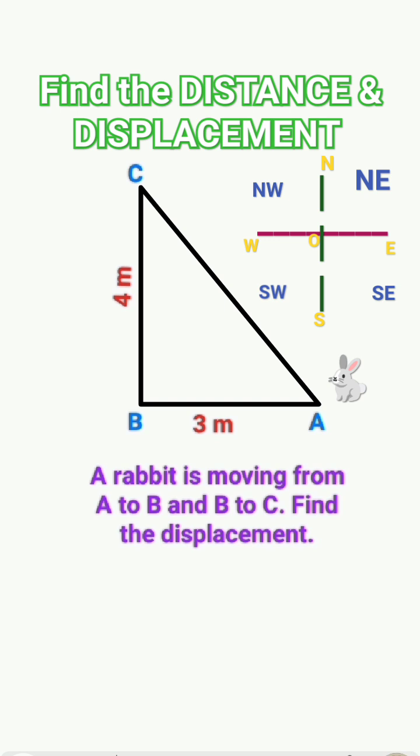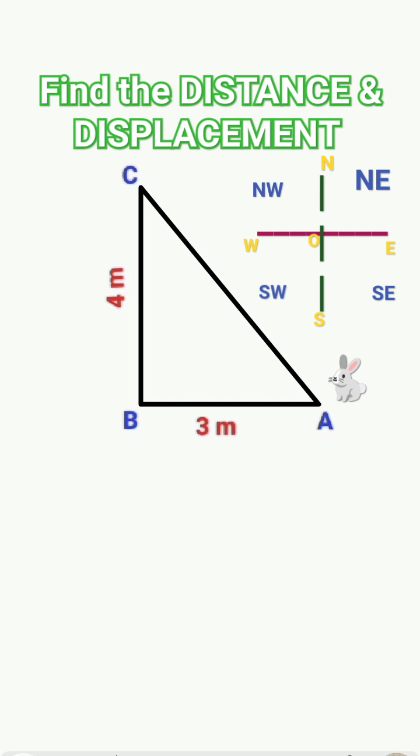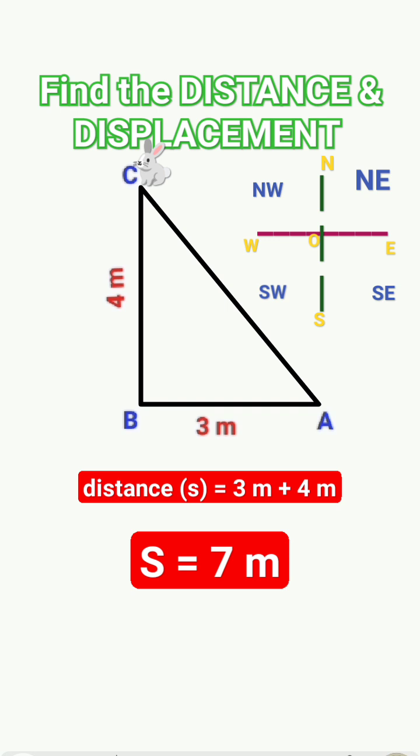So for distance, we just need to add AB and BC, which is equal to 3 meters plus 4 meters equals 7 meters. For displacement, we need initial and final points and the straight line joined between them, as we have to find direction as well.